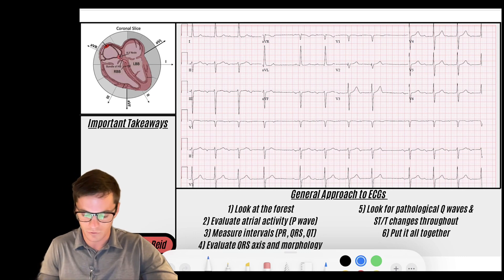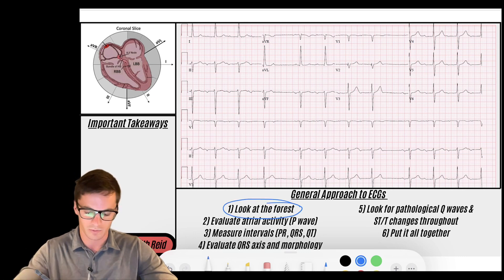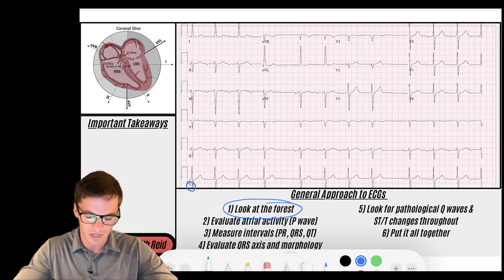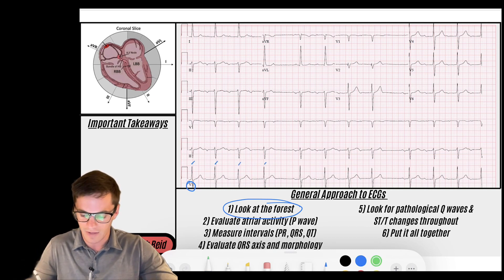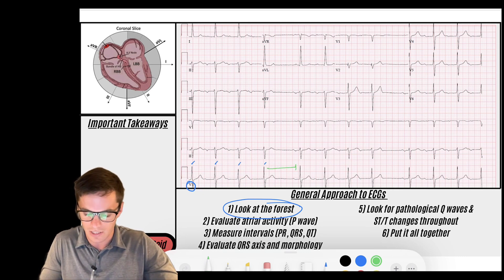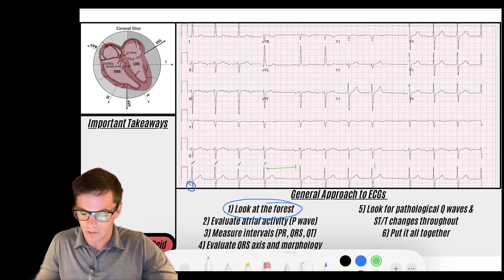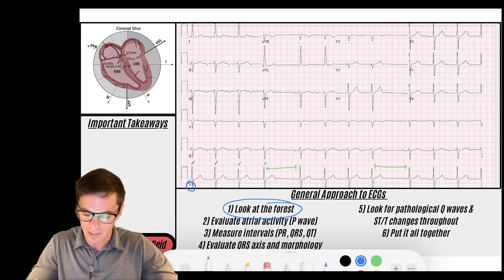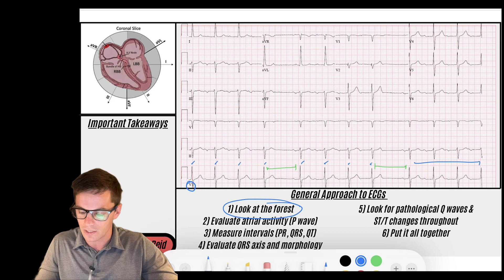So first thing we're going to do is look at the forest and get an idea of what's going on with this rhythm. We're going to look maybe in lead V5, and I notice I've got a narrow complex rhythm. It seems to beat along at somewhat of a normal rate. I have these pauses. I see a pause here. I also see a pause here. So a couple of pauses, but outside of the pauses, the rhythm seems to be somewhat regular throughout.